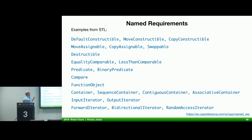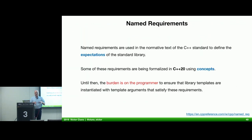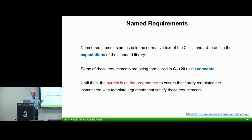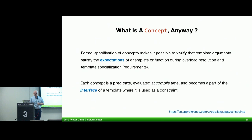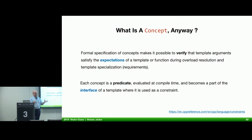A few examples of named requirements in the STL. Named requirements are used in the normative text of the C++ standard to define expectations of the standard library. Some of these requirements are being formalized in C++20 using concepts. Until then, the burden is on the programmer to ensure that library templates are instantiated with template arguments satisfying those requirements — otherwise we get horrible error messages, and sometimes it all compiles fine but the behavior is not what we expect. Formal specification of concepts makes it possible to verify that template arguments satisfy the expectations, during overload resolution. Each concept is a predicate evaluated at compile time, becomes part of the interface of that function, and is used as a constraint.